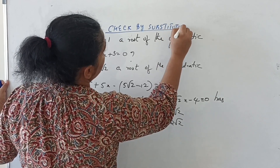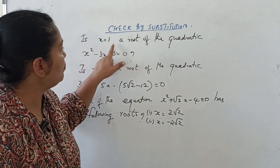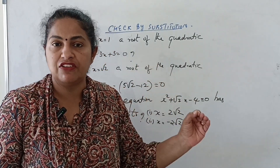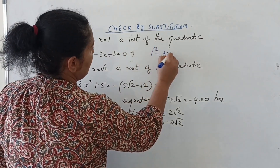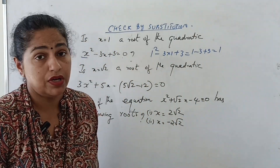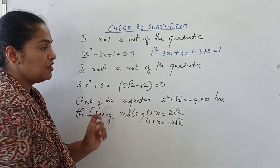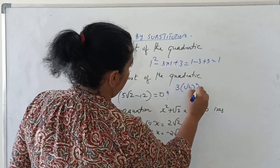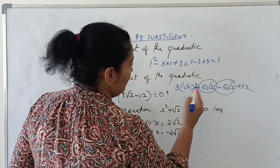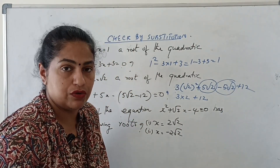Check by substitution — the first method. Is x = 1 a root of x² − 3x + 3 = 0? Substituting: 1² − 3(1) + 3 = 1 − 3 + 3 = 1, which is not equal to 0, so x = 1 is not a root. Next, is x = √2 a root of 3(√2)² + 5√2 − 5√2 + 12? Here 5√2 and −5√2 cancel, giving 3(2) + 12 = 18, which is definitely not equal to 0, so this is also not a root.